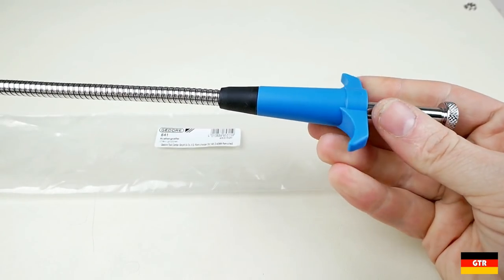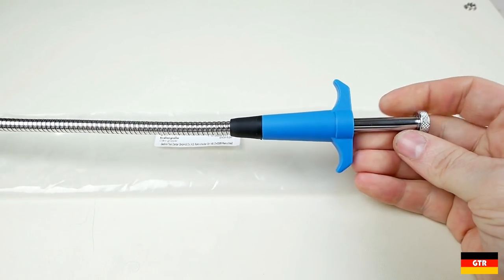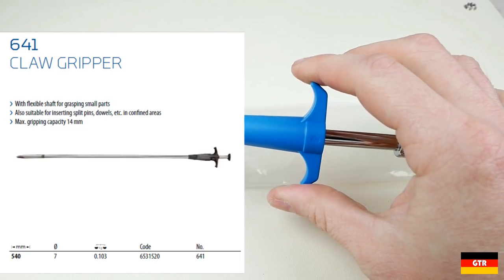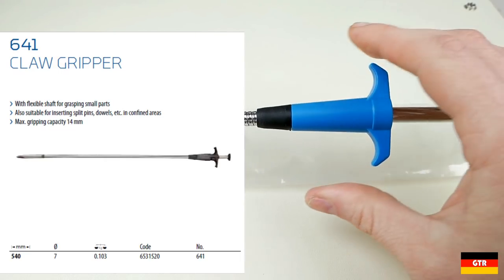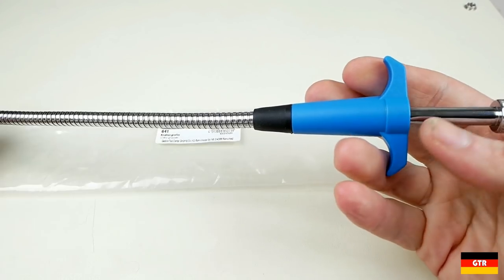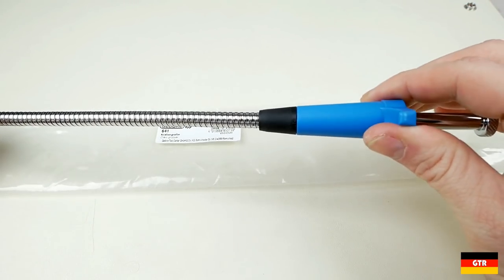Now the picture on the catalog for this, it looks a little bit different. The one in the catalog, this part up here is black. And I was kind of expecting this piece up here to be metal. And this right here is plastic.